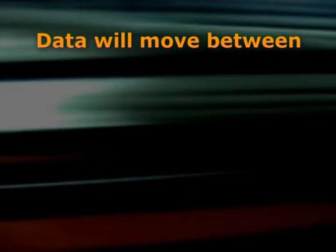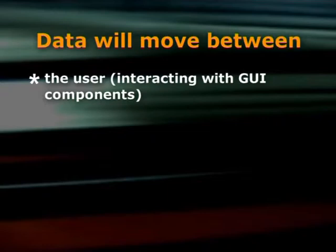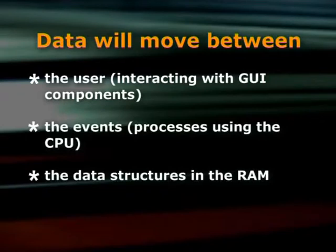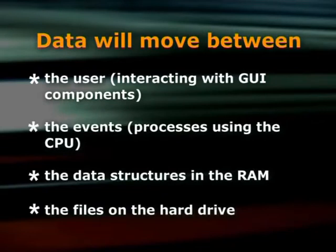We use a data flow diagram, or DFD, to show the movement or flow of the data identified in all the IPO tables. It shows what kinds of data will be used as input to and output from the system, where the data will come from and go to, and where the data will be stored. Data will move between the user giving input and getting output, and the events and the files on the hard drive. Same with the storage structures in the RAM. Data will move between the user interacting with GUI, or graphical user interface components, the events or processes when the CPU is used, the data structures in the RAM, and the files on the hard drive.